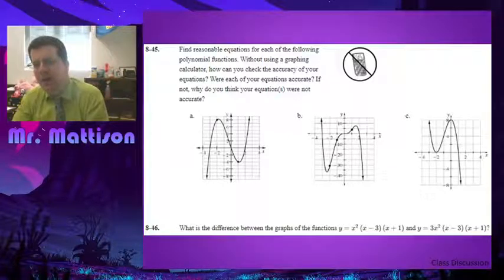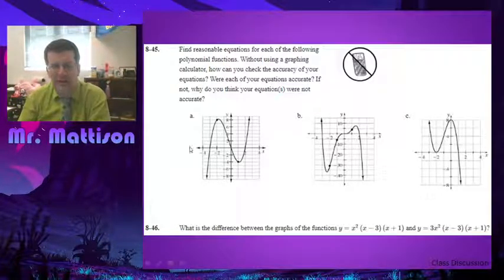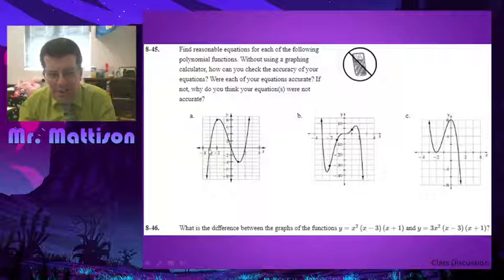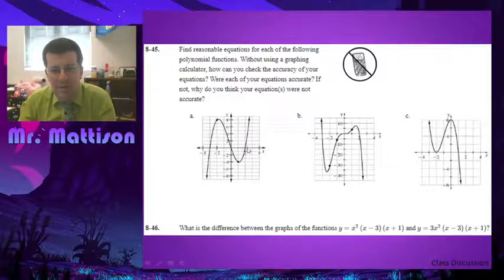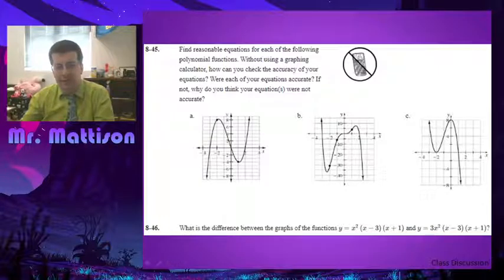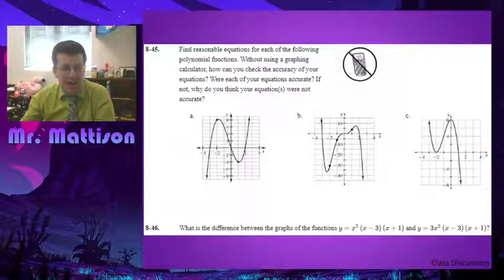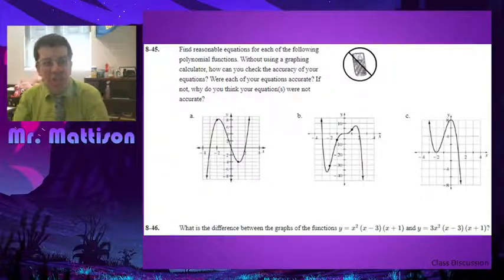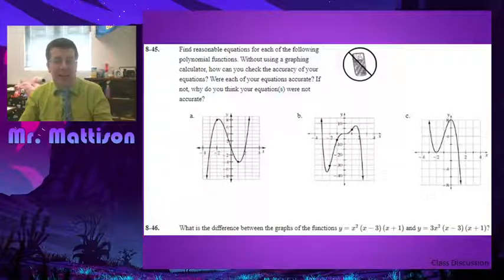So, for 45 here, if I look at these three graphs, the first one, I'm seeing that I'm crossing at negative 3, 0, and 2. So, I would say this would have the factors of x plus 3, x, and x minus 2. Now, that's something that we've been doing for the past few days. It should be pretty straightforward and we all kind of get how that works.